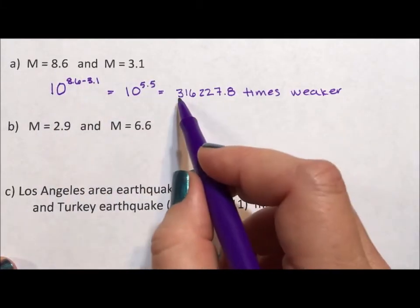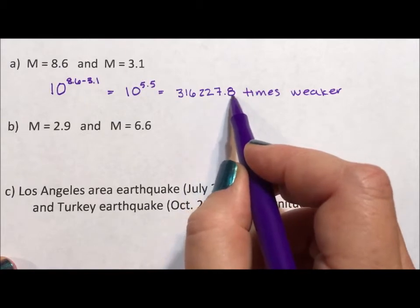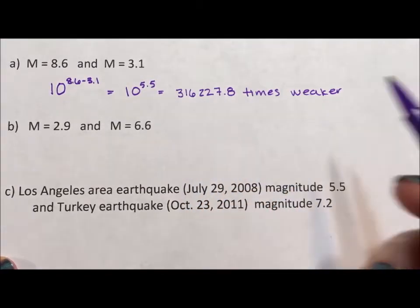So the 8.6 is 316,227.8 times stronger than the 3.1.